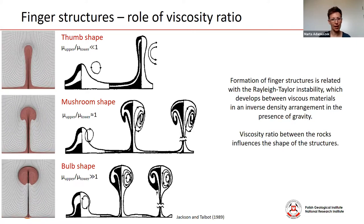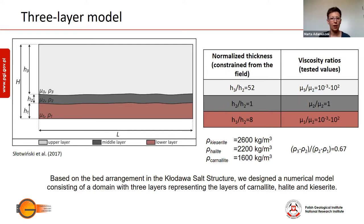In order to understand the finger structure formation in the Khodawa salt mine, where we observe three layers, we designed a numerical model. We constrained the relative layer thickness based on field observations and we tested different viscosity ratio values for the layers, with all values normalized. For density relations, the density difference ratio was used, with density values assumed as the densities of pure carnalite, halite, and kieserite layers.